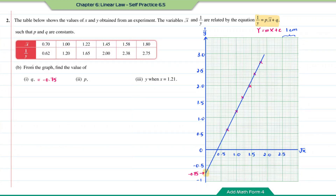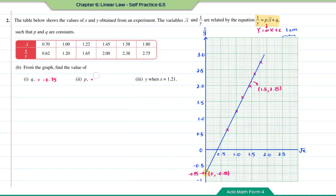Number 2: find the value of p. By comparison, p equals m, which is the gradient. To find the gradient, we need two points on the straight line. The first point is the y-intercept, with coordinate (0, −0.75). The other point has coordinate (1.5, 2.15). So p equals (2.15 minus negative 0.75) divided by (1.5 minus 0), giving p equals 29 over 15.